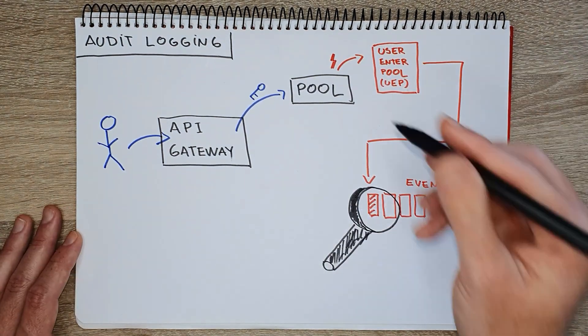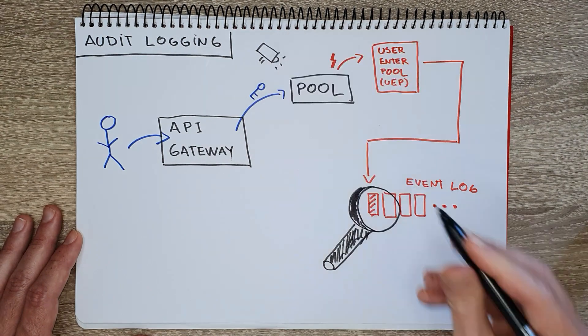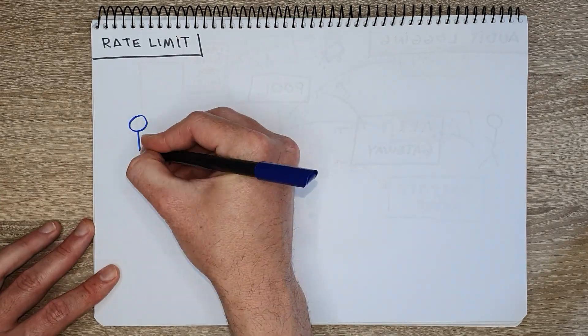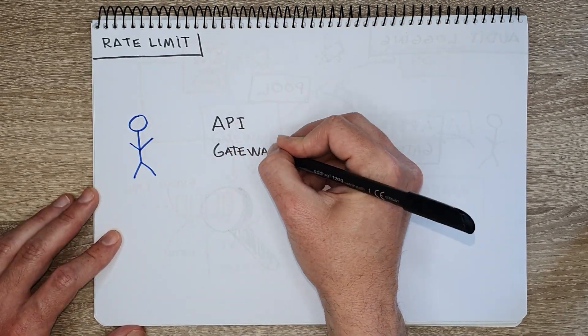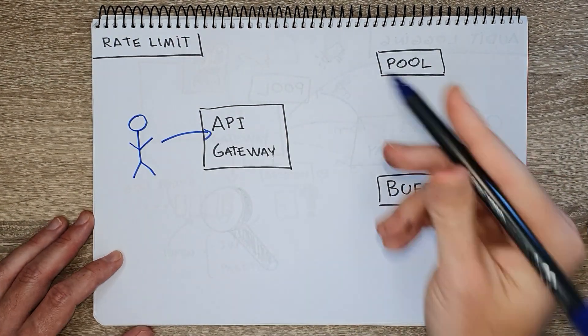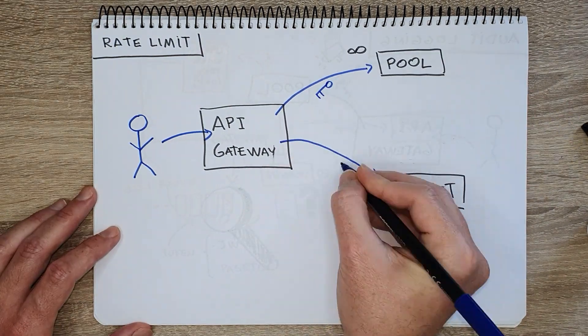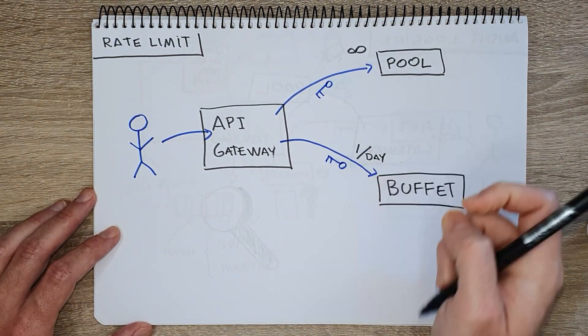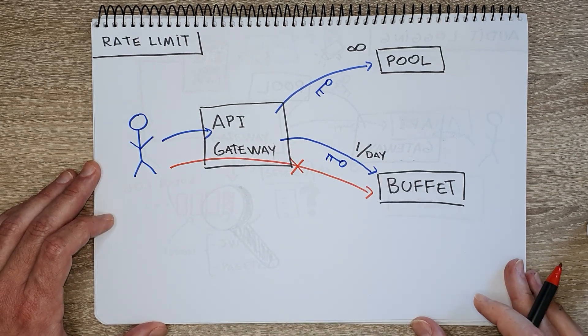Hotels, for example, have access logs and security cameras. You can also protect not only what resources a user has access to, but how much of it they can consume. This is useful to prevent denial-of-service attacks and to guarantee availability for legitimate users. This is typically done using a mechanism called rate limiting, which requires defining and enforcing quotas — the amount of resources a given principal can consume. In hotels, for example, they check if you already had breakfast so you can't have it twice.